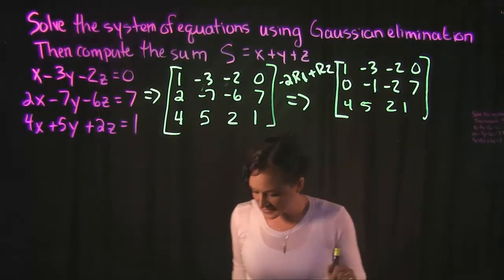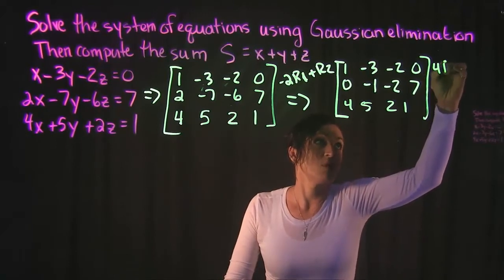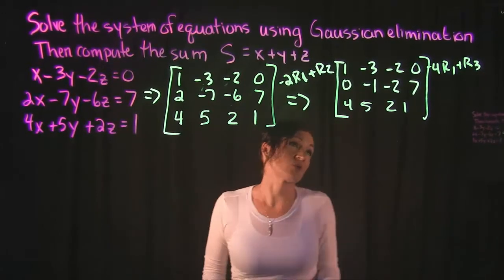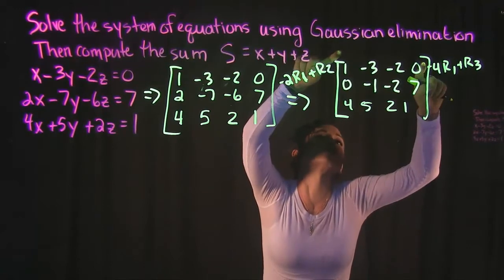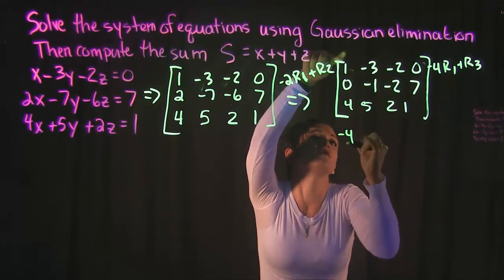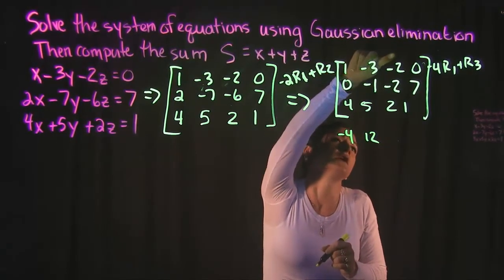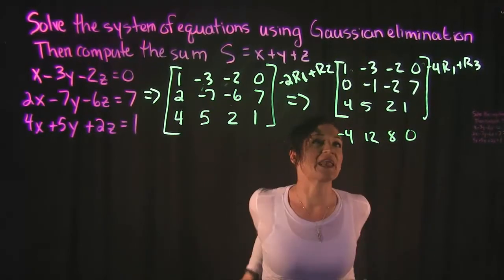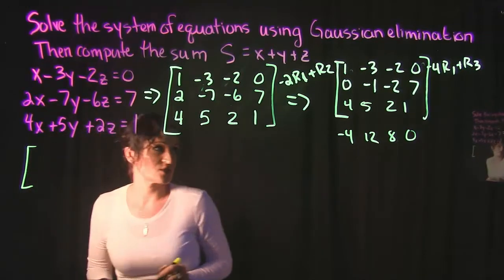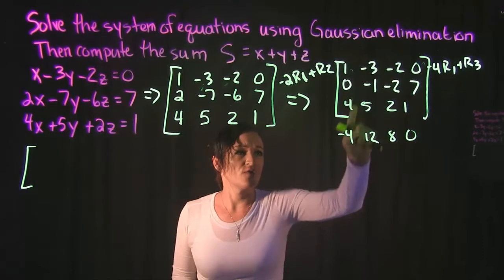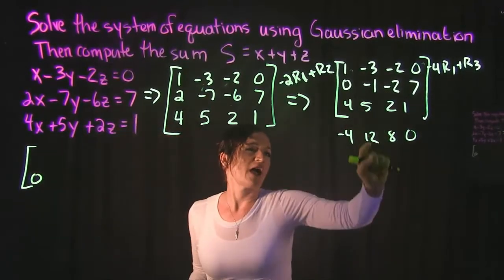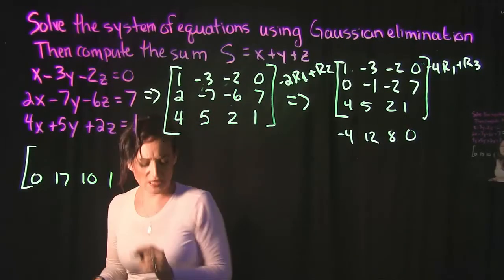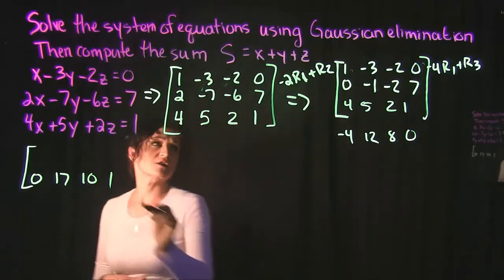Our next calculation: take row 1, multiply it by negative 4, and add that to row 3. Doing that: 1 times -4 is -4, -3 times -4 is 12, -2 times -4 is 8, and 0 times -4 is 0. Adding to row 3: 4 plus -4 is 0, 5 plus 12 is 17, 2 plus 8 is 10, and 1 plus 0 is 1.